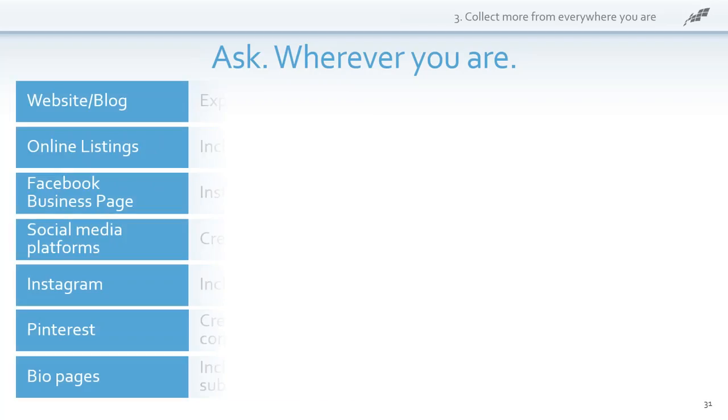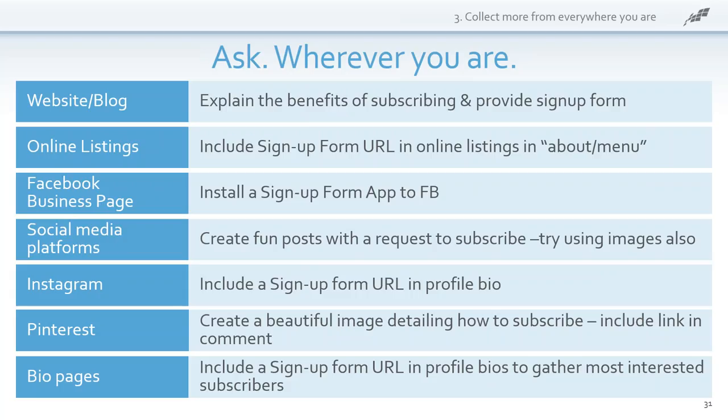On your website, explain the benefits of subscribing and provide a sign-up form. In online listings, include a sign-up URL in your about or menu page. On your Facebook page, install the sign-up form we mentioned. On social media, create a fun post using images — Canva is a pretty good tool — with a request to subscribe. On Instagram, include a sign-up URL in your profile bio. On Pinterest, which is all image-based, create an image — if you're doing a download, create an image of the book or report and link that to your sign-up form. In bio pages, include the sign-up URL in your profile bios to gather the most interested subscribers.